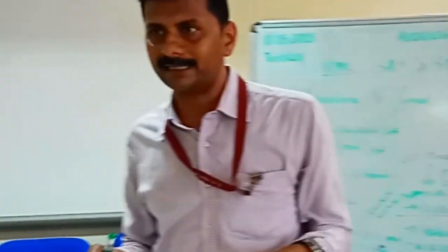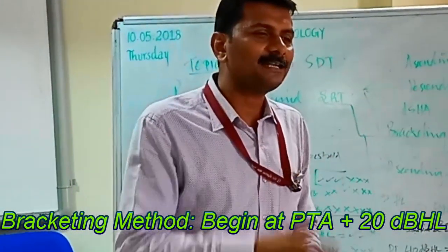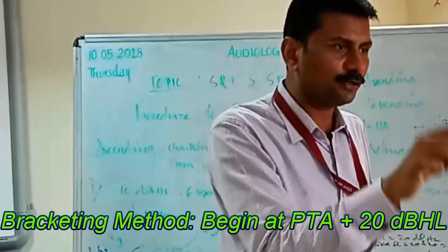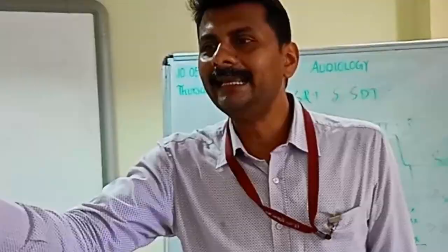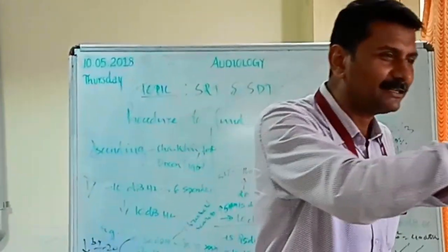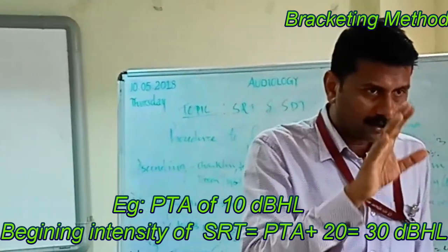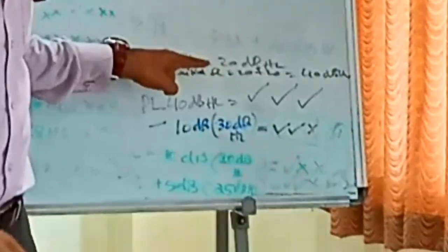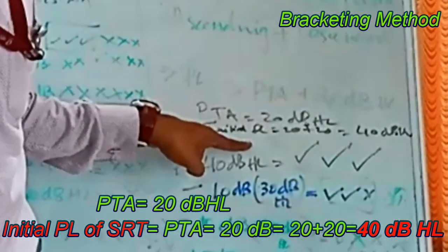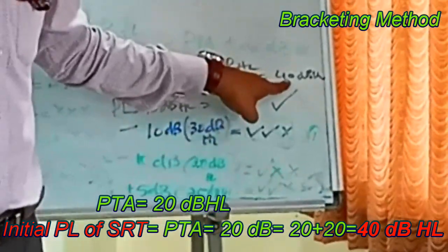Similarly there is a descending method and an ASHA method. The method used in the clinic is the bracketing method, which is very handy because you don't have to search for the threshold from scratch. You take the PTA and add 20 dB to it. A signal-to-noise ratio of 17 dB is considered excellent. In a sound-treated room with a PTA of, say, 10 dB, adding 20 dB is decent enough. So we start the speech audiometry test at PTA plus 20 dB.